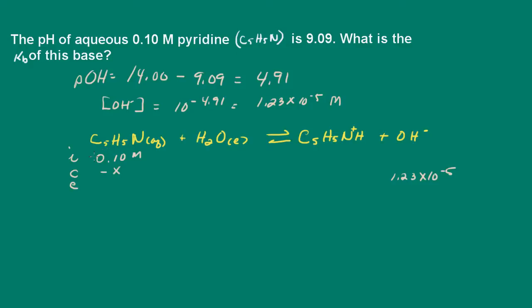And we know that the equilibrium concentration of hydroxide ion is 1.23 times 10 to the negative 5 molar. The pyridine concentration is going to decrease by some amount X. And we already know X. X is equal to 1.23 times 10 to the negative 5. So at equilibrium, the concentration of pyridine is going to be 0.10 minus 1.23 times 10 to the negative 5.